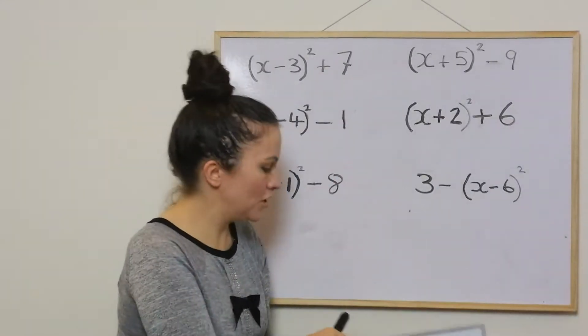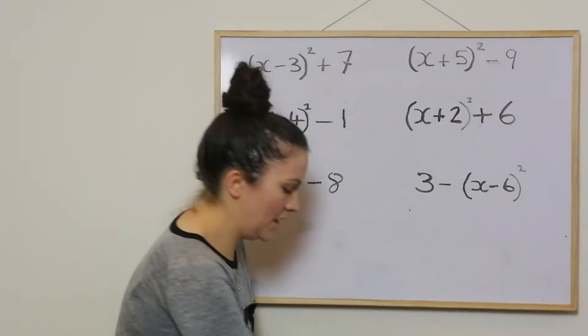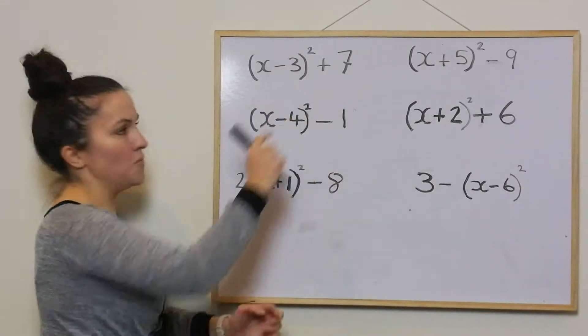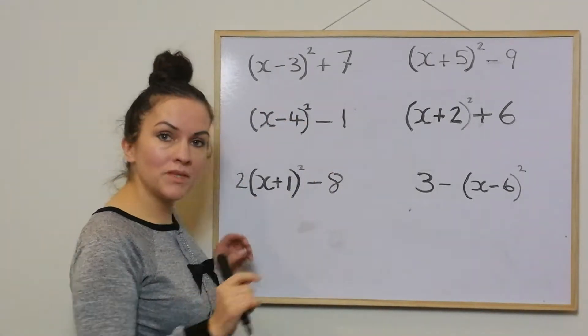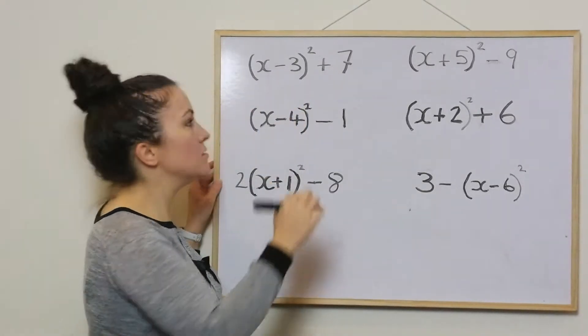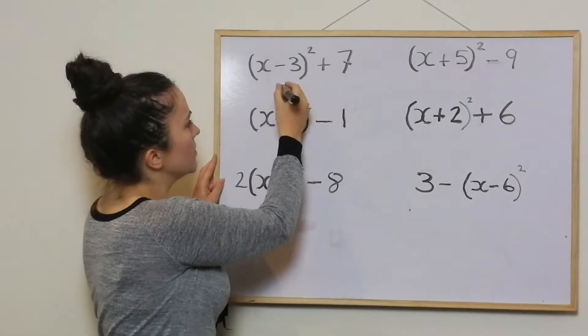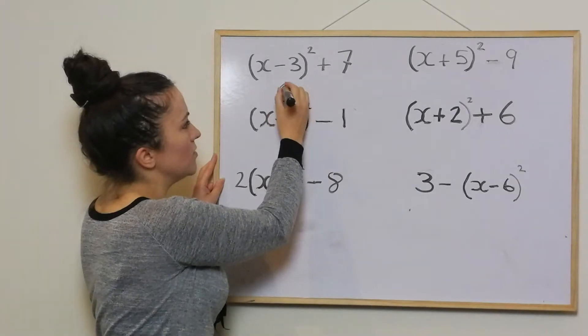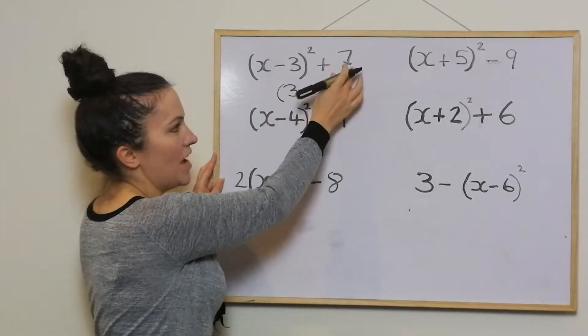In this one minute video I'm going to show you how to get the turning point of parabolas when it's in this format. All you do is take the number that's in the bracket but change the sign. So in here it's negative 3, but in the turning point it would be positive 3.